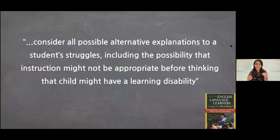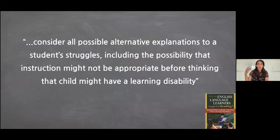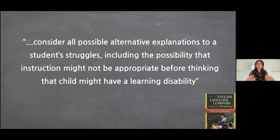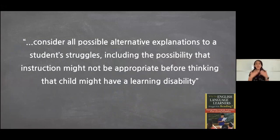Jeanette Klingner emphasizes considering all possible alternative explanations for a student's struggle — including whether instruction is appropriate — before thinking a child might have a learning disability. A student is having a challenging time: the gut instinct should be curiosity first. What's going on? Could it be the instruction? Could it be the student having a bad day? Going through all different tiers before concluding this child might have a learning disability is essential.